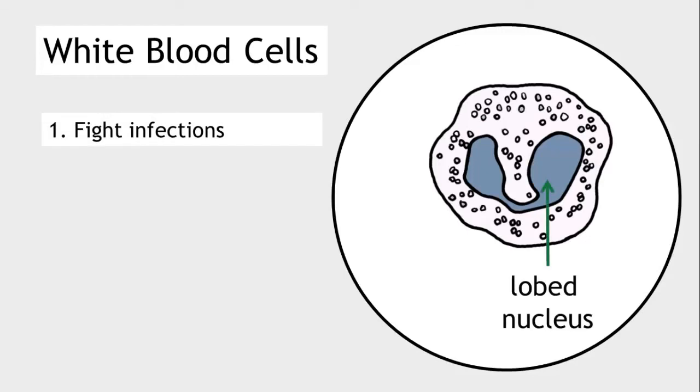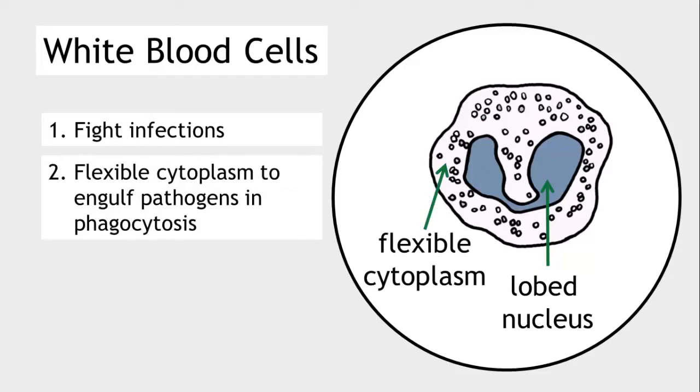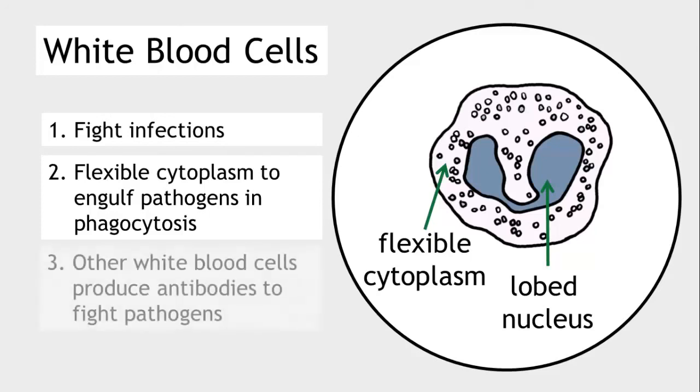White blood cells have a flexible cytoplasm so that they can engulf pathogens in a process called phagocytosis. Some other white blood cells are specialized to produce antibodies, and it's these antibodies that fight pathogens.